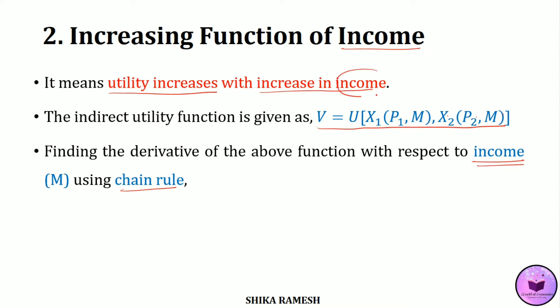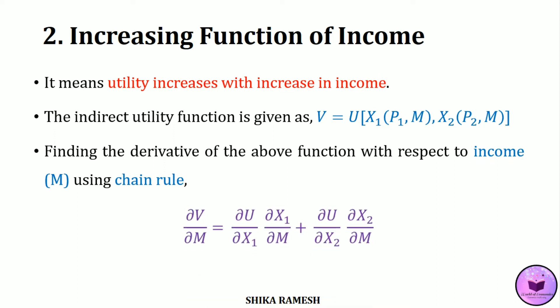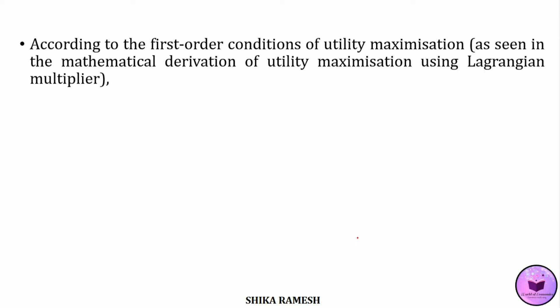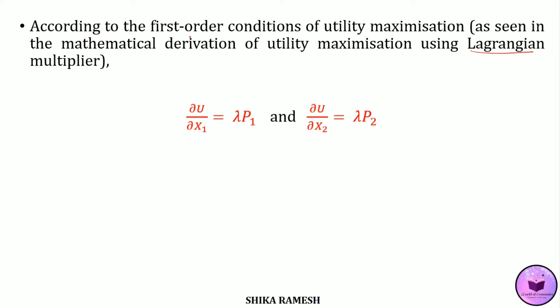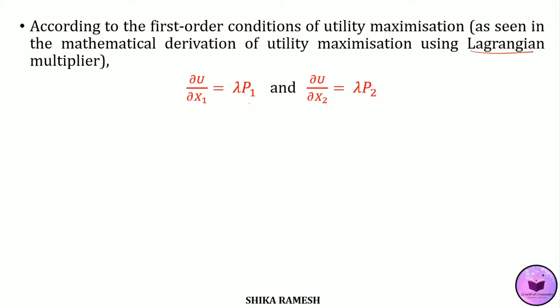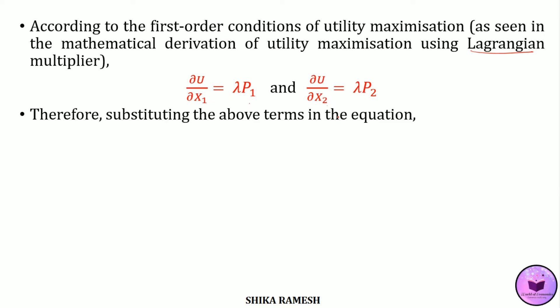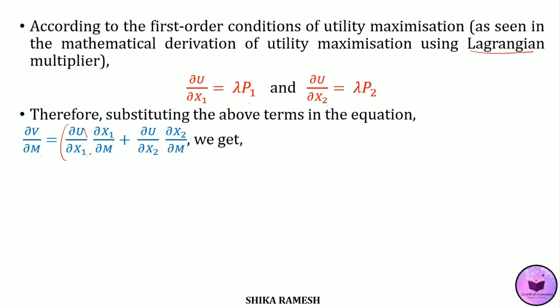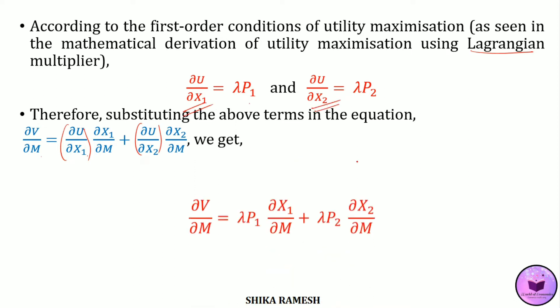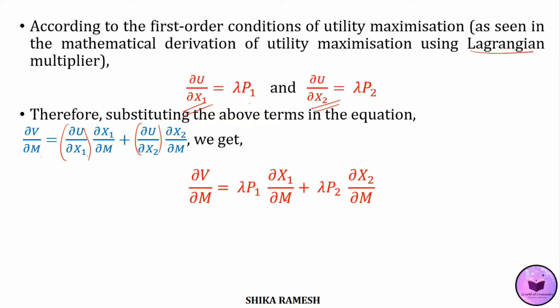Since we are examining the Indirect Utility Function as an increasing function of income, we differentiate it with respect to income using the chain rule. This gives: ∂v/∂m = (∂u/∂x1)·(∂x1/∂m) + (∂u/∂x2)·(∂x2/∂m). From the first-order conditions of utility maximization using the Lagrangian multiplier, we have ∂u/∂x1 = lambda·p1 and ∂u/∂x2 = lambda·p2. Substituting these in, we get ∂v/∂m = lambda·p1·(∂x1/∂m) + lambda·p2·(∂x2/∂m).